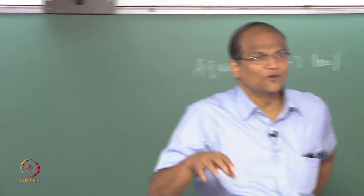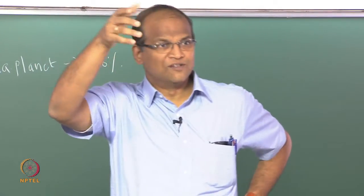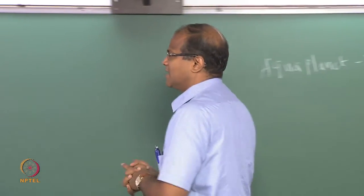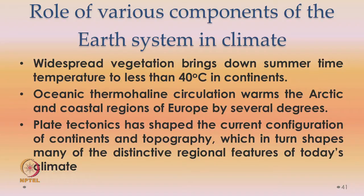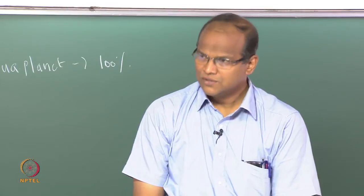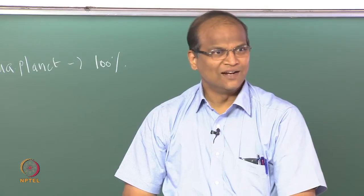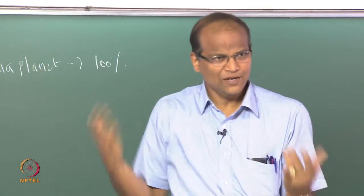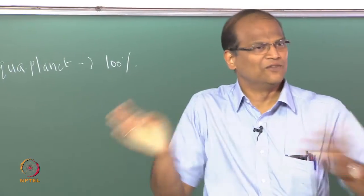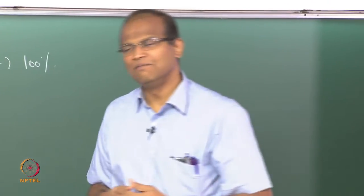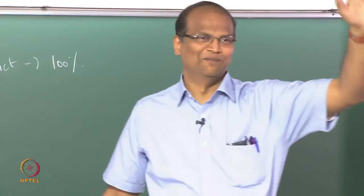Ocean currents are having a big role in making Europe so habitable — that is why a lot of population is concentrated there and the continent developed first. Otherwise, for places at 50 degrees latitude like London and Hamburg, temperatures should have been minus 40 or minus 50, highly unlivable. Plate tectonics, which we discussed today, has shaped the current configuration of continents and topography. Most of the continents are in the northern hemisphere — we do not know why — and the northern hemisphere appears to be more developed. The only decent countries in the southern hemisphere are Australia, New Zealand, Brazil, and South Africa.